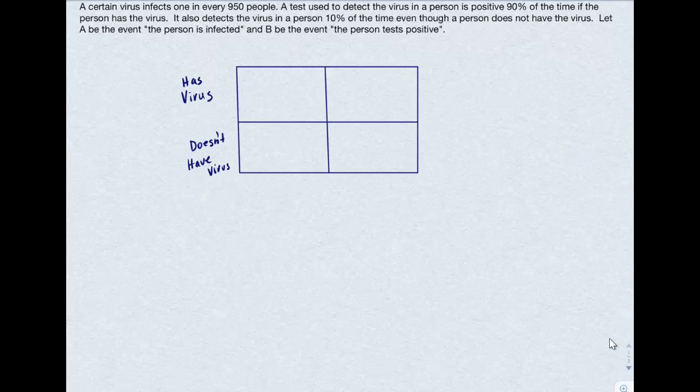So how do we go about solving this? I like to do this with a table. On the left-hand side, I'm going to indicate the first row are people that have the virus, and the second row is people who do not have the virus.